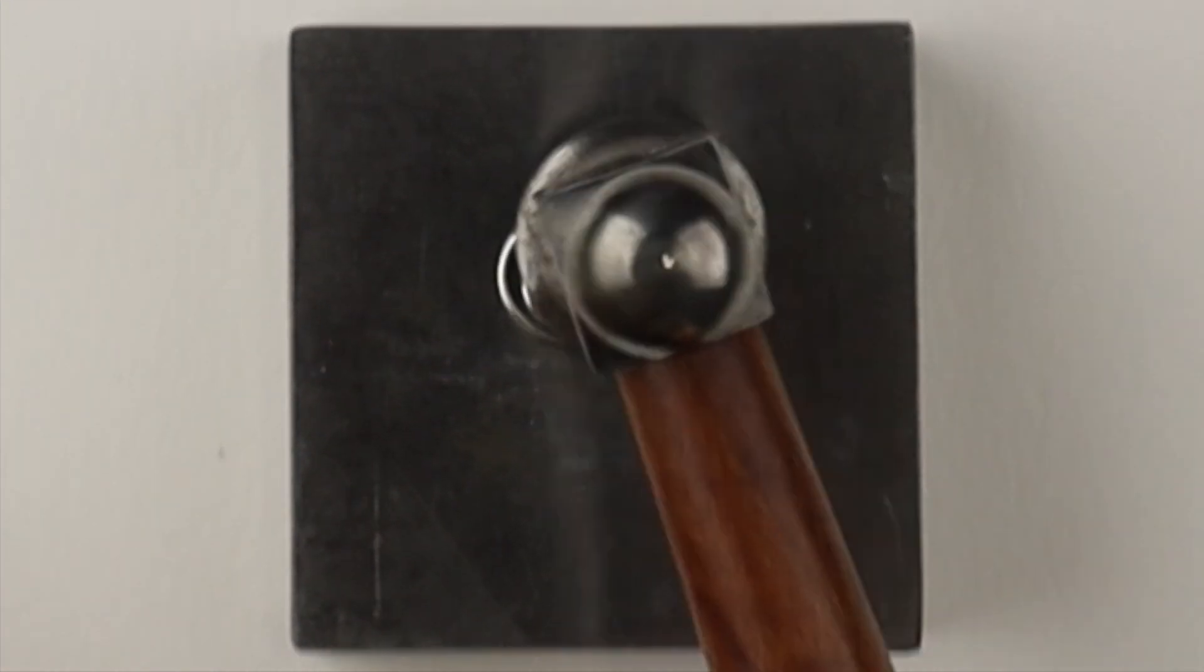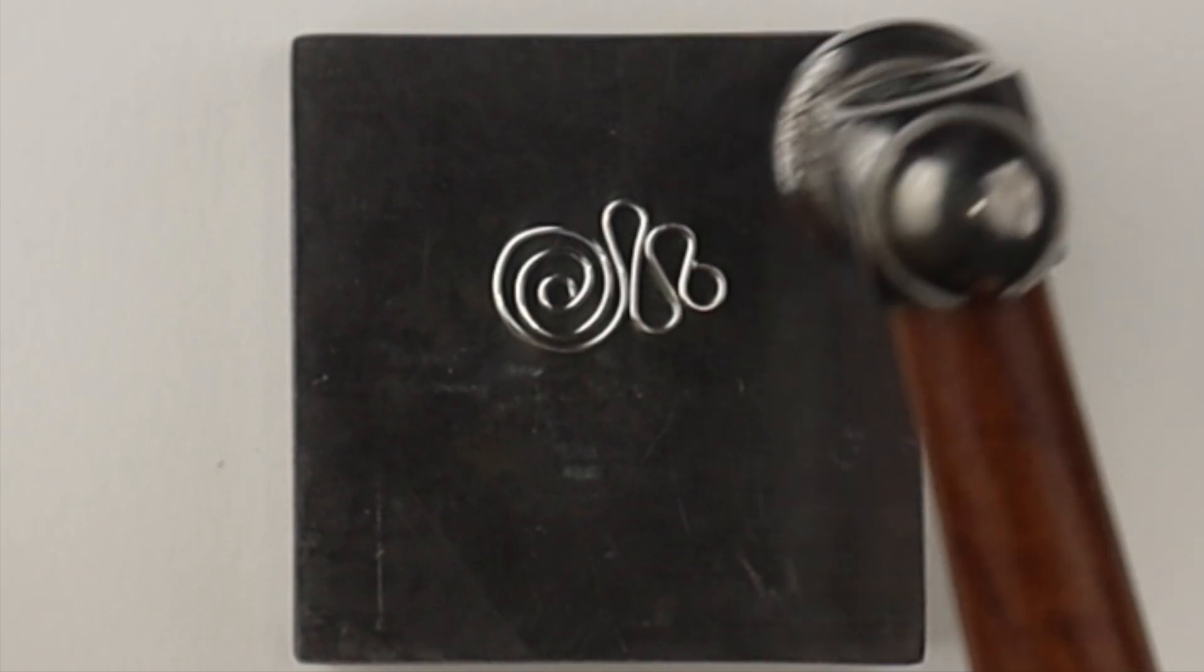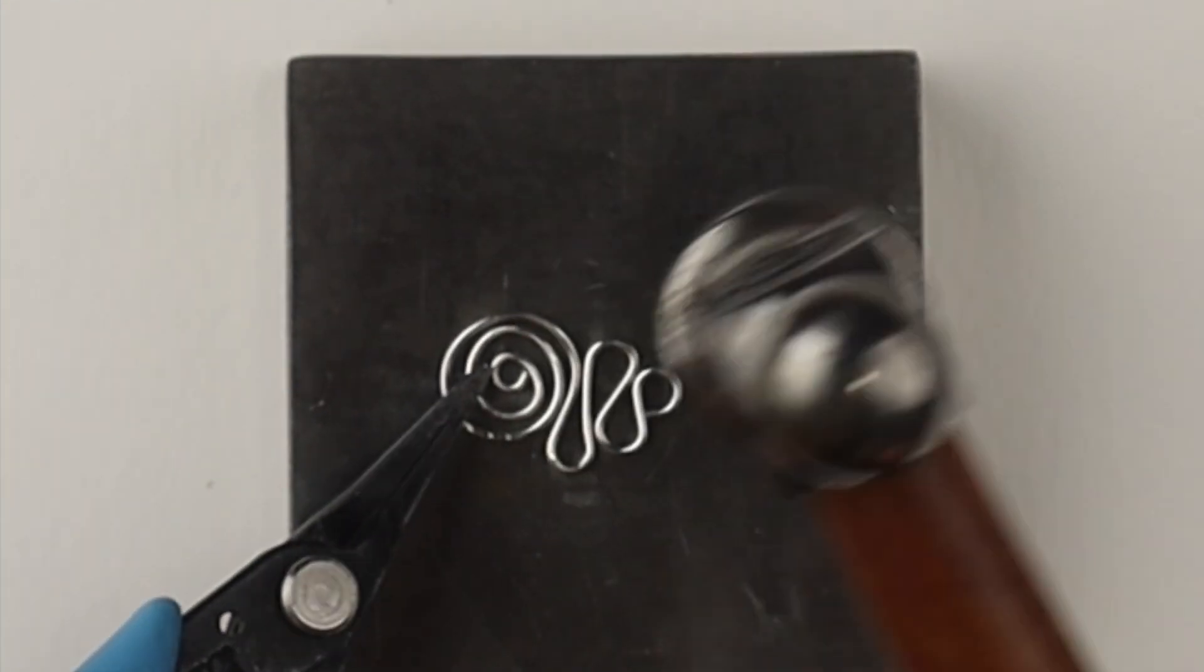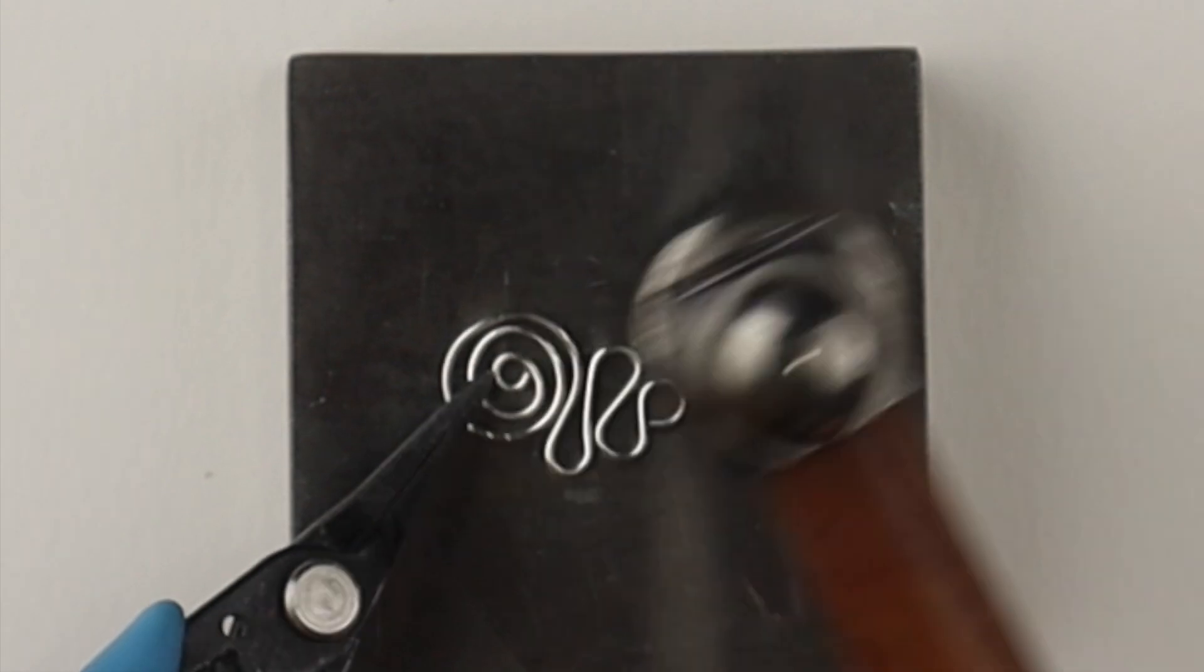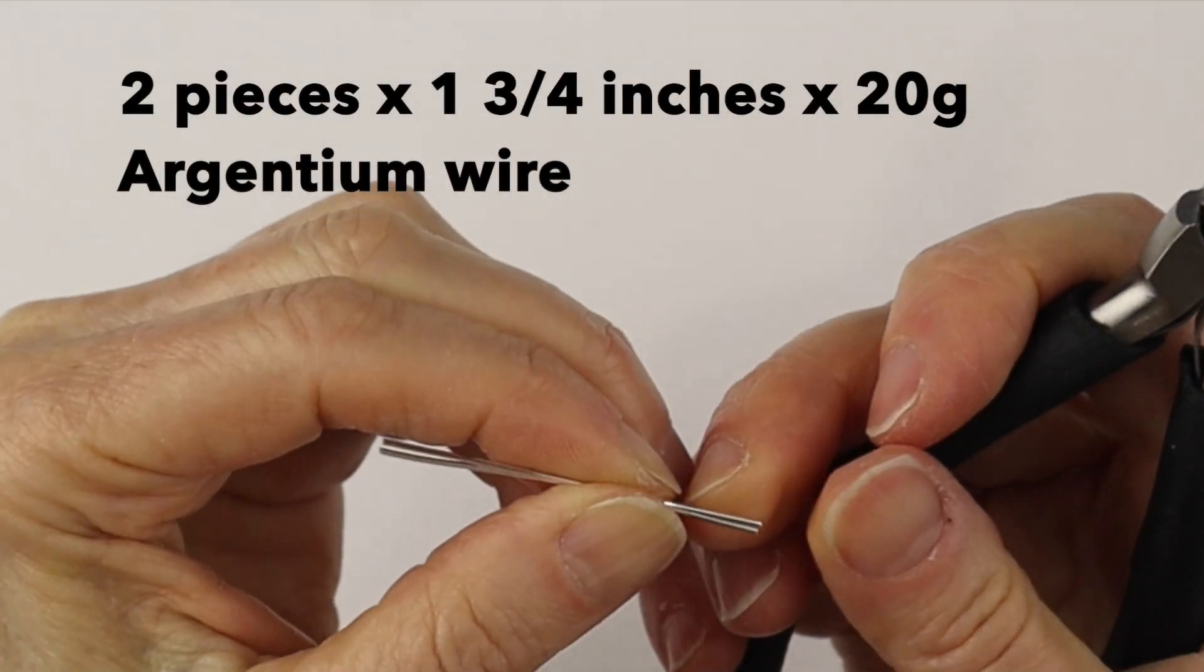And then if you like you can hammer it with a hammer and the steel block. Hold it down with your pliers if you need to. Hammer it a bit on both sides.